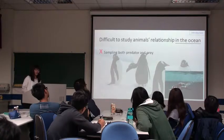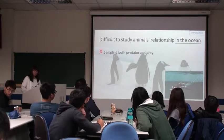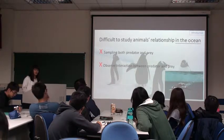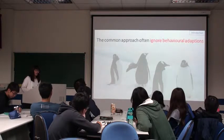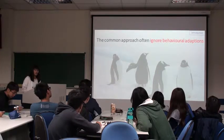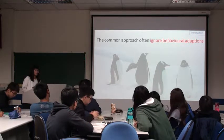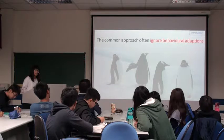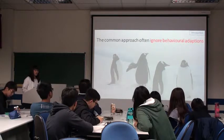First, we cannot easily sample both predator and prey, because it is logistically and financially difficult. And second, we cannot observe interactions between predator and prey directly, because we all know it's underwater. The common way to study about this relationship is to find out the prey availability within the predator's home range, but through this approach, we only get limited information, because we ignore the behavioural adaptation of the predator and the prey.